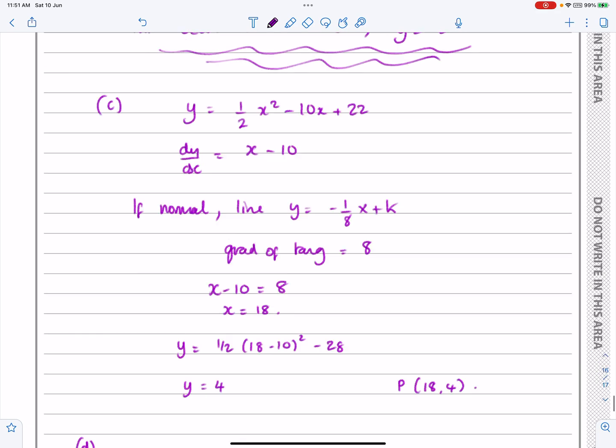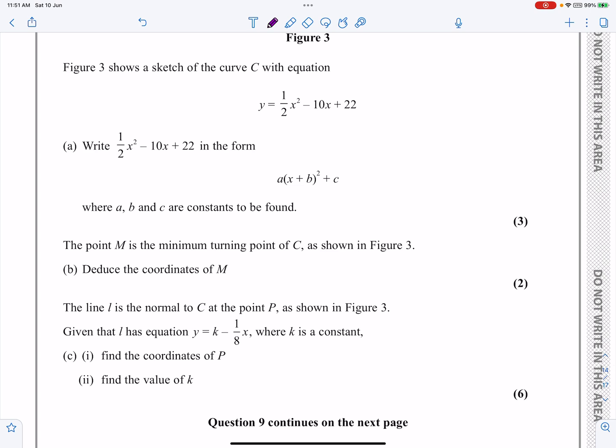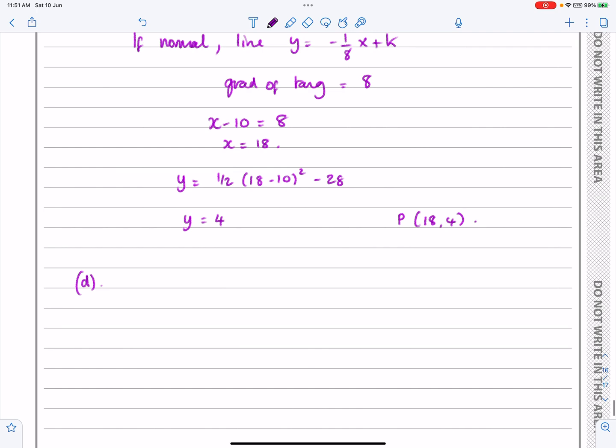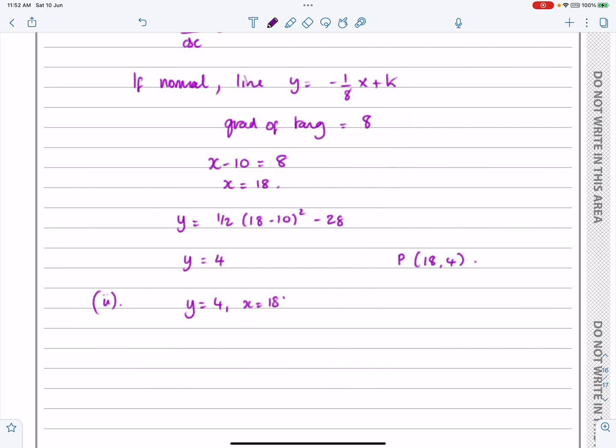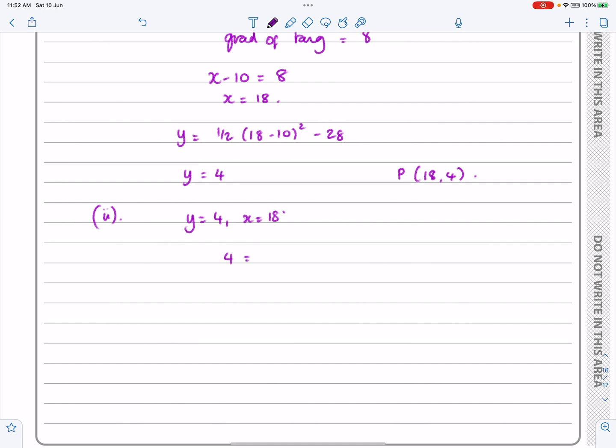OK, part D. And again, sorry to keep jumping backwards and forwards here. So rather, sorry, C part 2, find the value of K. OK, that's not going to be too bad to do. Let's change that and call that C part 2. So for C part 2, because I know that y is 4 when x is equal to 18. Let's tell them that y equals 4, x equals 18. If I just plug that into the equation, that one up there, I've got that 4 is equal to minus an eighth of 18 plus K. So you can just rearrange all that to get what K works out to be. K works out to be 25 over 4.